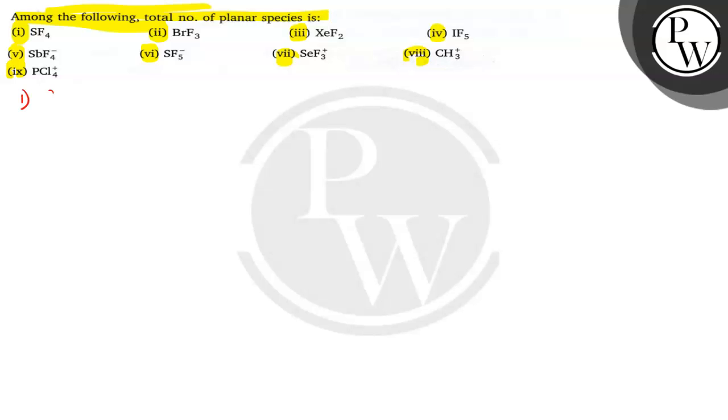The first one is SF4, sulfur tetrafluoride. It has a seesaw structure. So SF4 structure is non-planar.